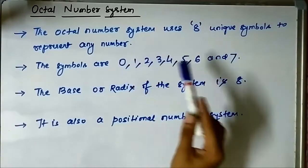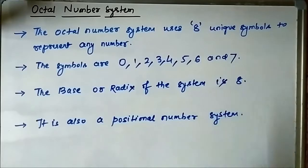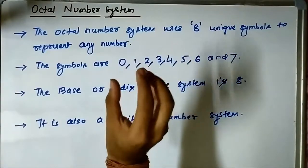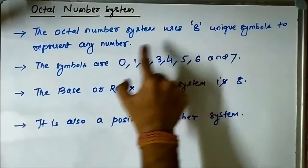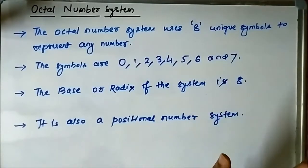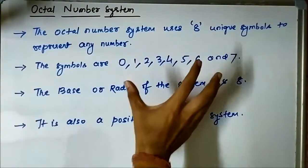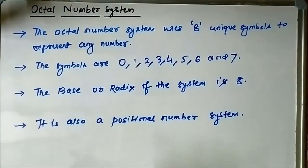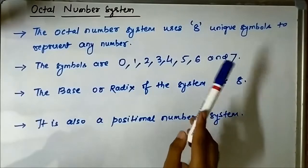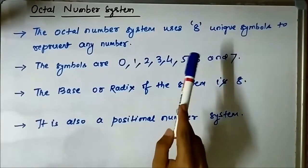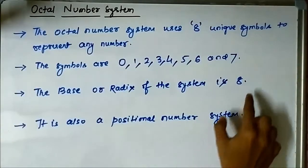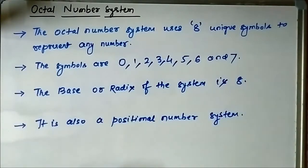In our octal number system, whenever you find a number it will contain digits from these 8 symbols and nothing else. There cannot be any 8, 9, or 10 — those are for the decimal number system. Any digit in the octal number system must be from these 8 symbol choices. Since 8 unique symbols are used, the base or radix of this number system is 8.